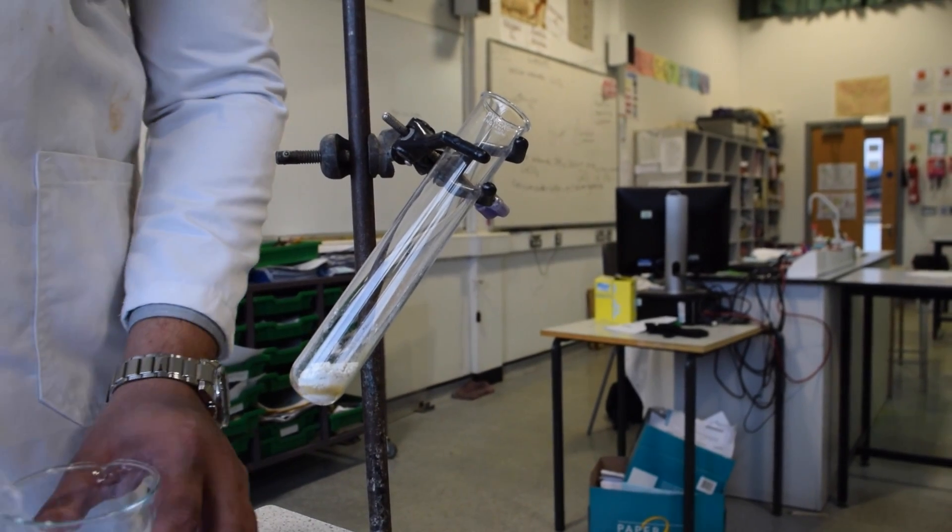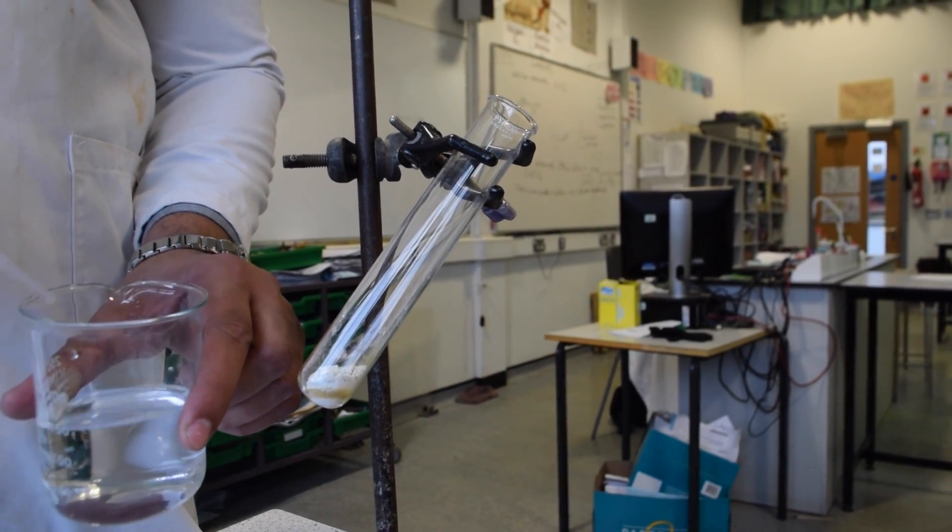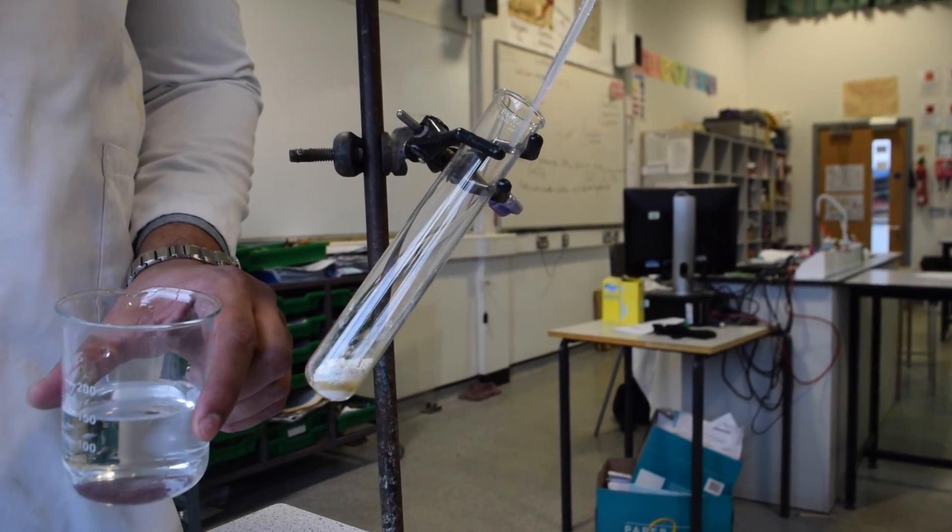Now we want to reverse the change, so we're going to add some water. Fill a pipette and add the water to the copper sulfate.